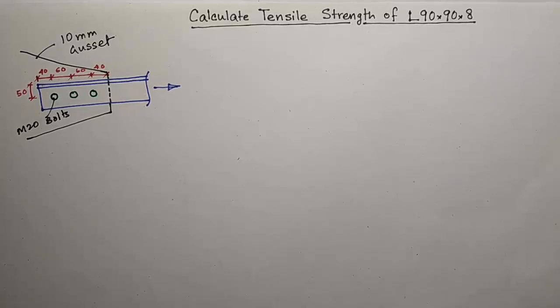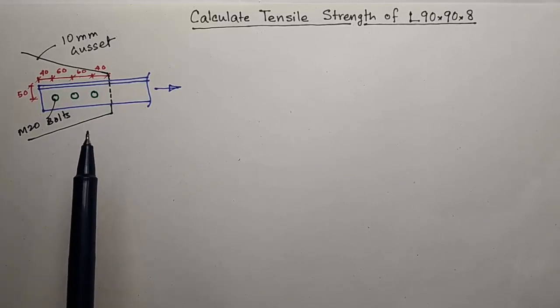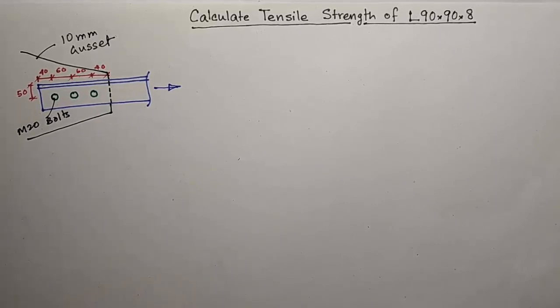Hello everybody, welcome to Being Civil. In this video we will calculate the tensile strength of single angle L90x90x8 which is connected to a 10 millimeter gusset with the help of three M20 bolts. In the previous video we discussed the theory of design of tension members as per Section 6 of IS 800-2007. Let's start.